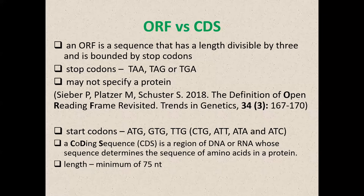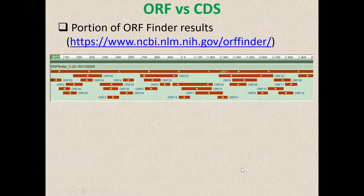Most automatic annotation systems look at ORFs greater than 100 or greater than 150 nucleotides. In the case of phages, which have a lot of smaller coding sequences, I would use a minimum of 75 nucleotides as the cutoff.